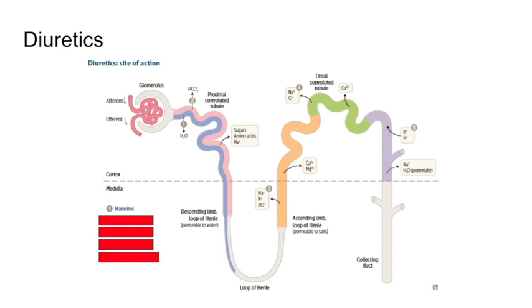Number two, which is actually increasing the amount of bicarb secreted into the nephron — even though the arrow was pointed out, it is into the nephron. Acetazolamide.